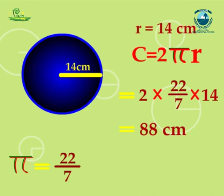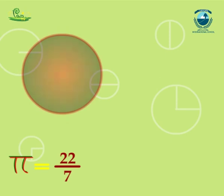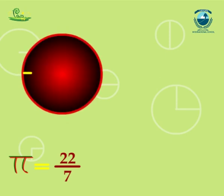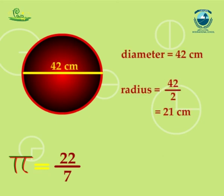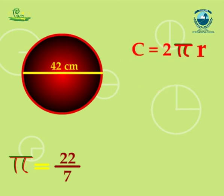Now we will find the circumference of a circle whose diameter is 42 cm. We have diameter 42 cm, therefore radius will be 42/2, that is equal to 21 cm.